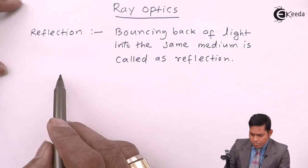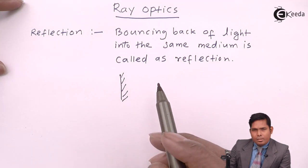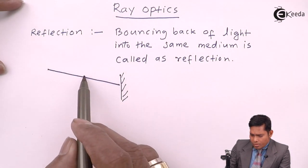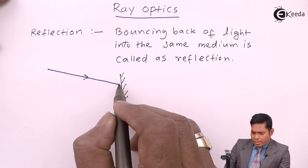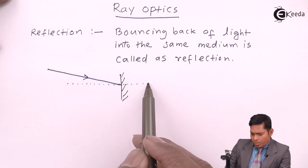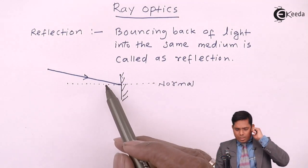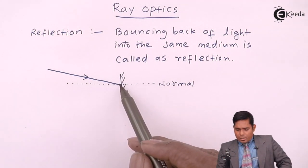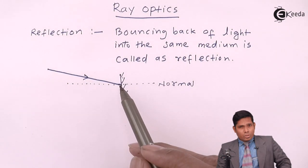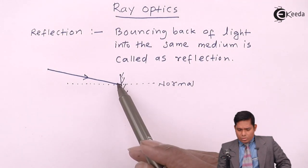Suppose I have a surface which is reflecting in nature, like a plane mirror, and light is incident like this — this is the incident ray which strikes the surface at a certain point. If I draw a normal at that point — the normal is a line which is perpendicular to the surface — the ray strikes the surface at this point and we draw a normal here. This is the incident ray and this is the reflecting surface, which in this case is a plane mirror.